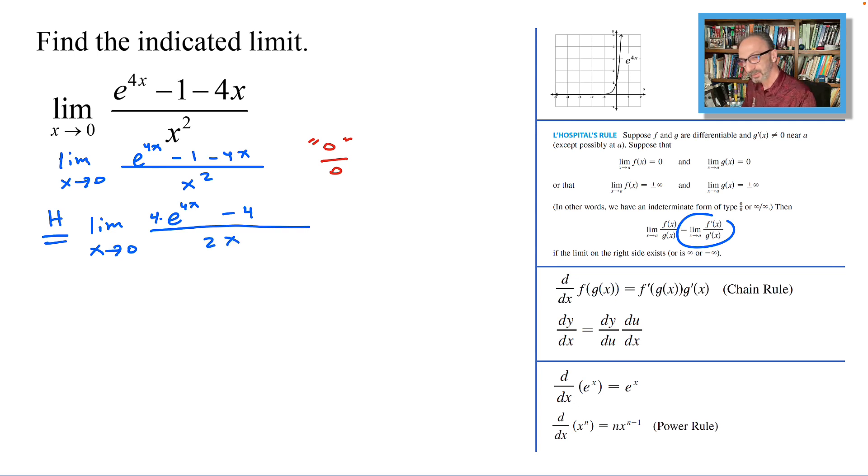And if you attempt to plug in 0, I end up with e^(4×0) which is 1 times 4 on top, it's going to be 4 times 1 minus 4, and that's a 0. Down it's going to be 2 times 0, so we still have the same format or the same form 0 over 0. Of course we can't write 0 over 0, but that's the form that we have.